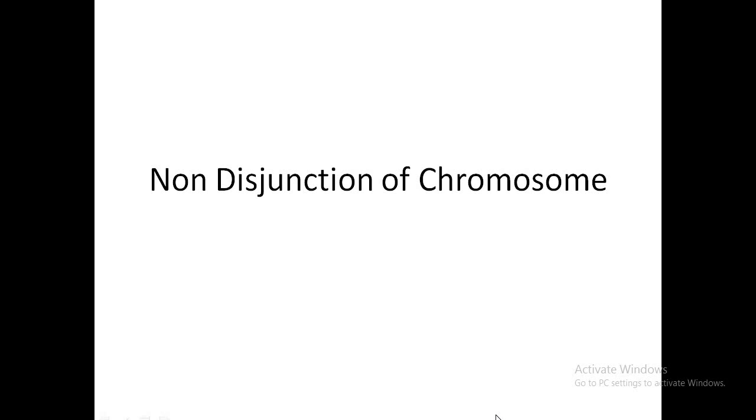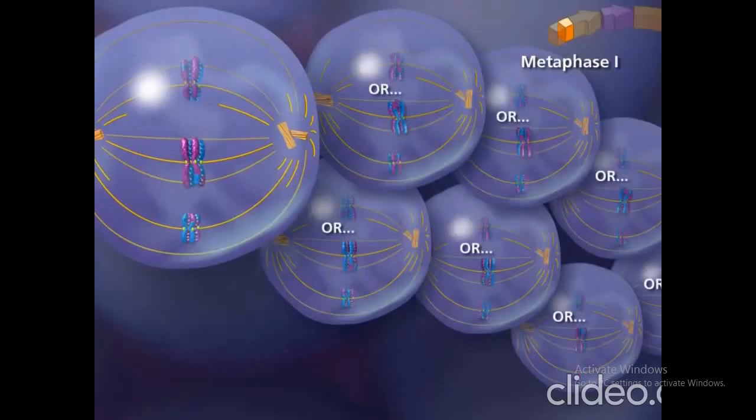Hello friends, today in this video we will discuss about non-disjunction of chromosomes. What it means is that chromosomes are not separated properly — it's the failure of the separation of sister chromatids or homologous chromosomes during cell division.